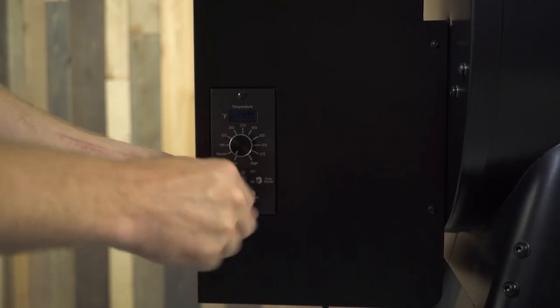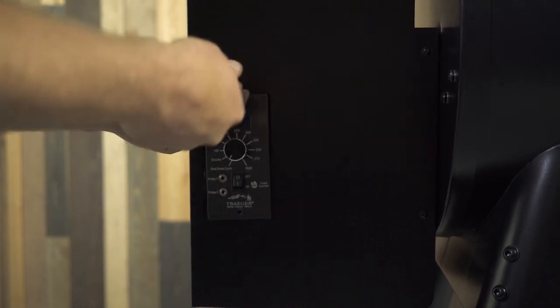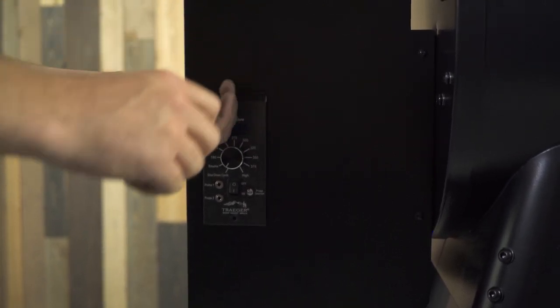With the Phillips screwdriver, remove the two screws mounting your controller to the hopper. Make sure your pellet hopper is completely empty of any pellets.